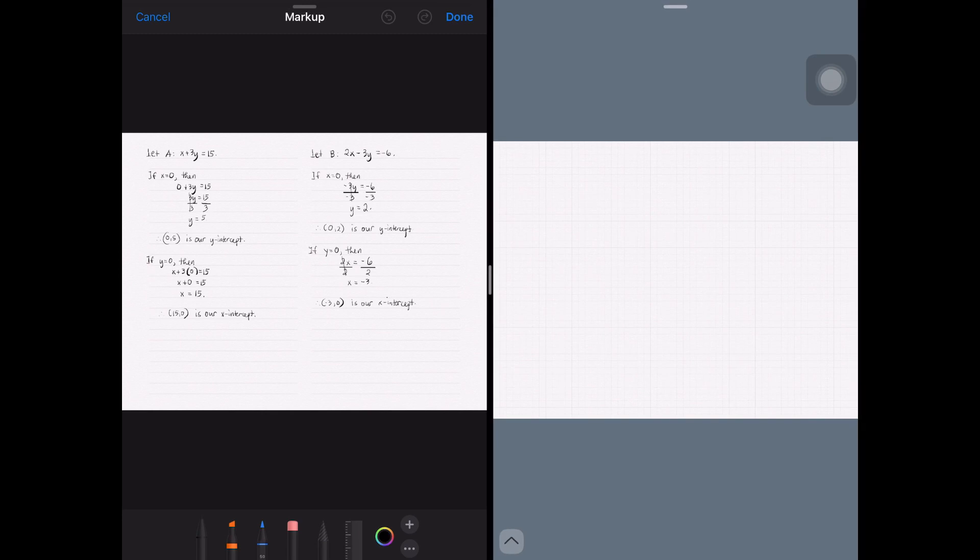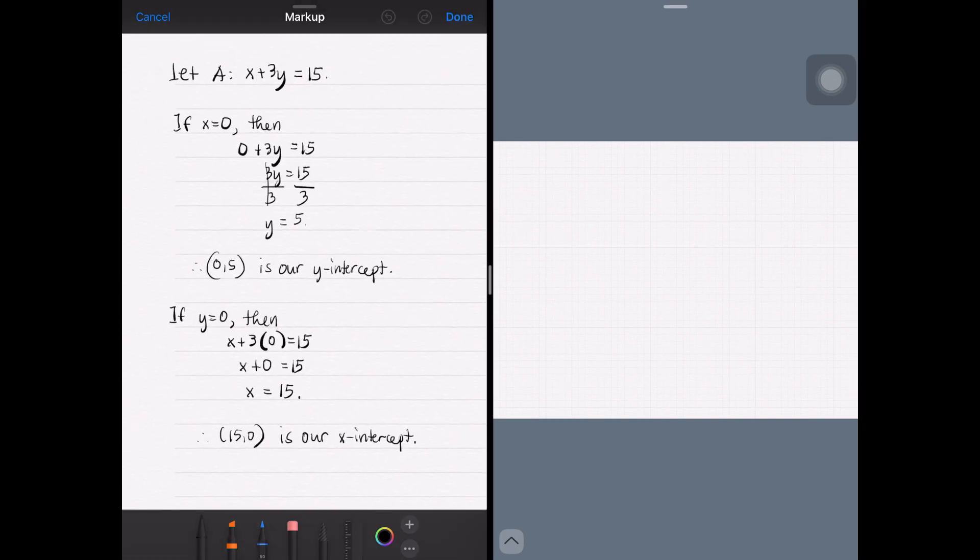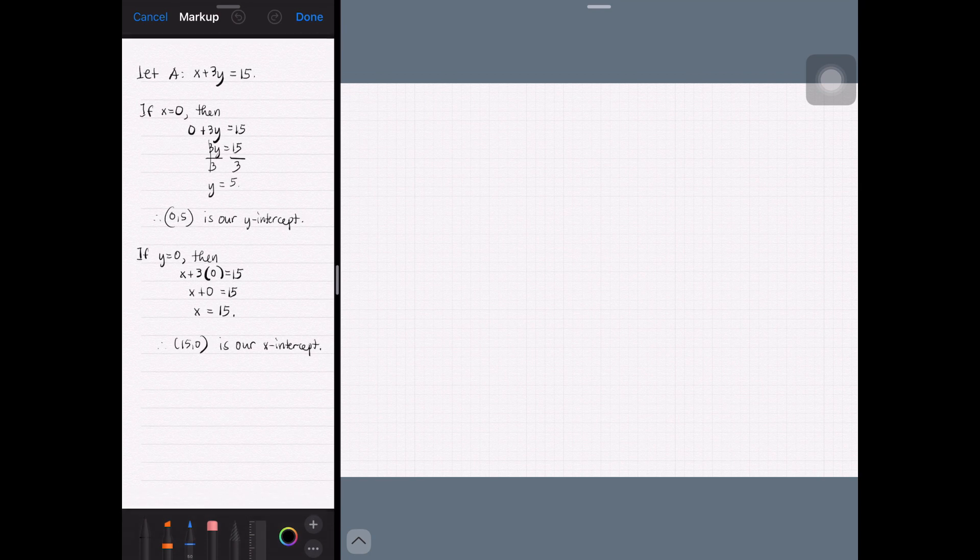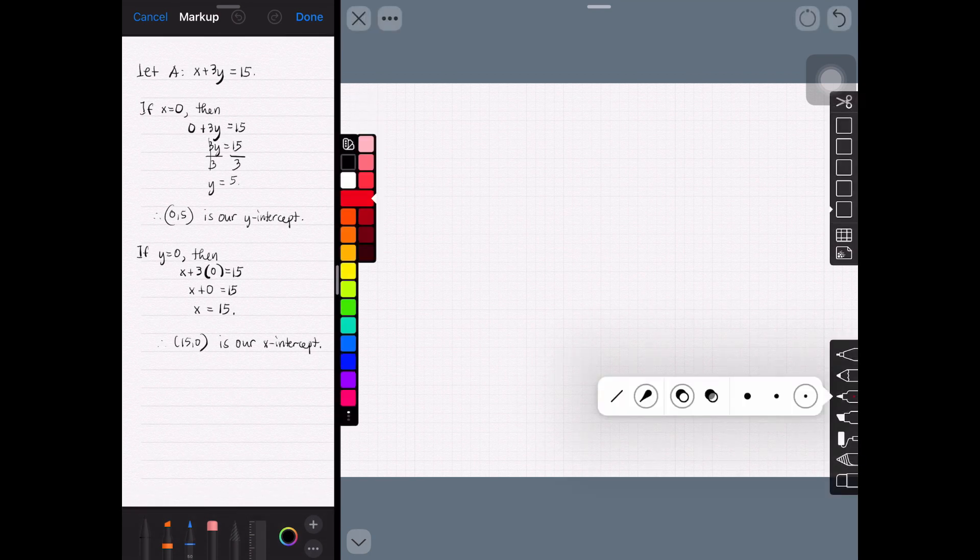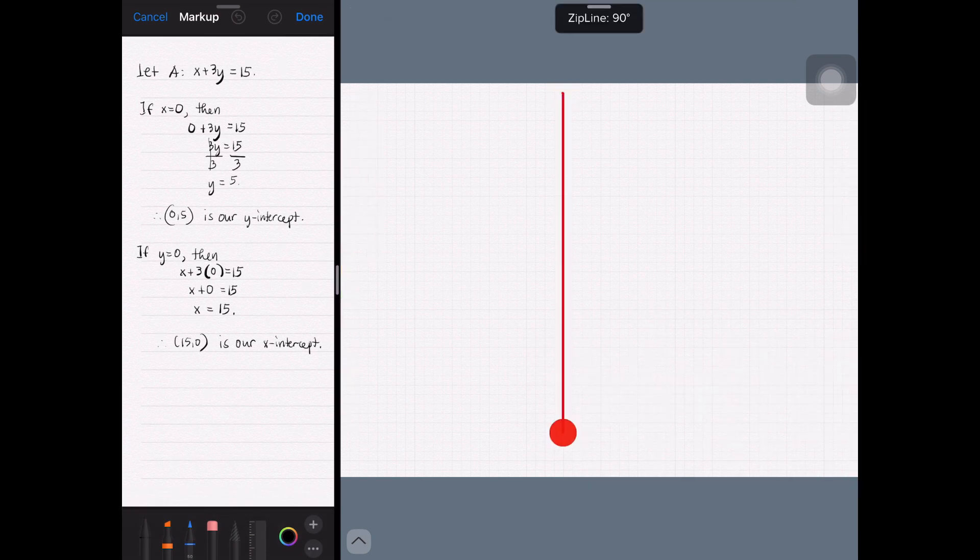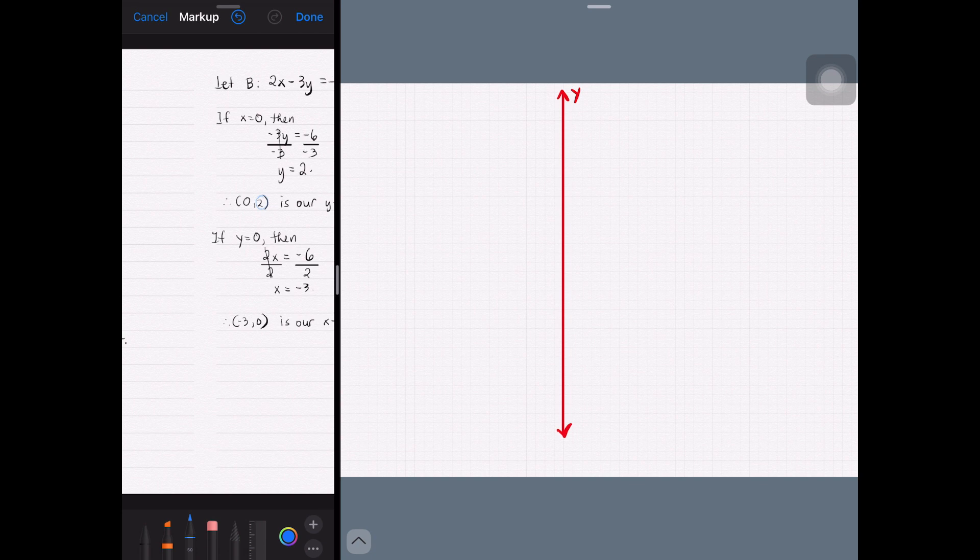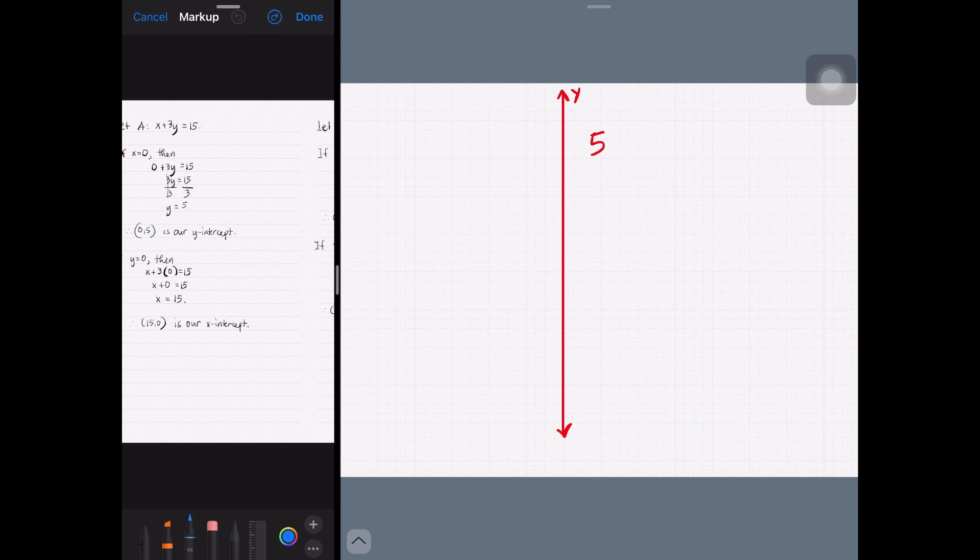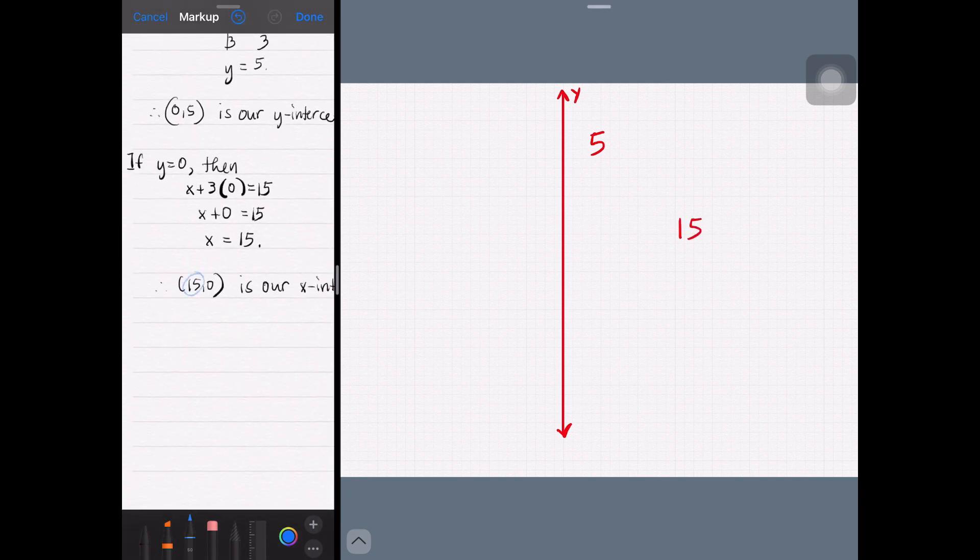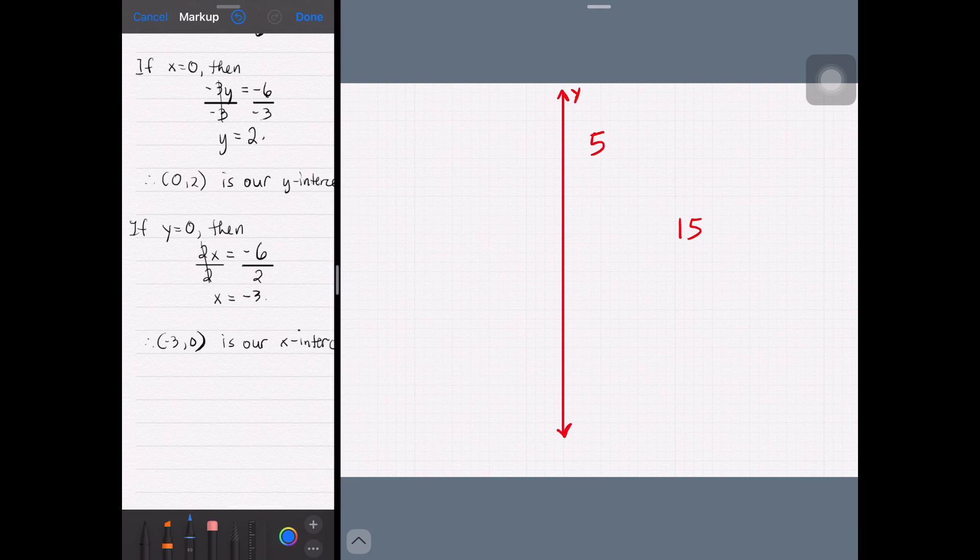Let's now plot the points that we had solved. Notice that for our y values, we have 5 and 2 here. So we know that our space for our y value will have max 5. As for x, we have positive 15 and negative 3. So the right side will have as much as 15 units and the left side just needs at least 3 units.